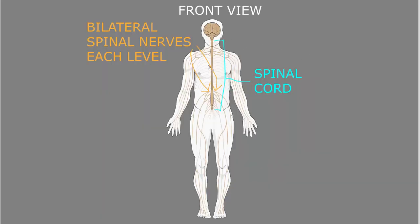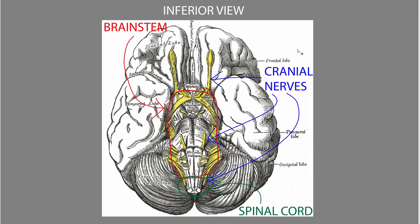The spinal cord is divided into 31 horizontal levels, and each level of the spinal cord has a pair of spinal nerves bilaterally — so there's a right and a left spinal nerve on each level. For the cranial nerves, there are 12 bilateral pairs, and they are attached to either the brain or the spinal cord.